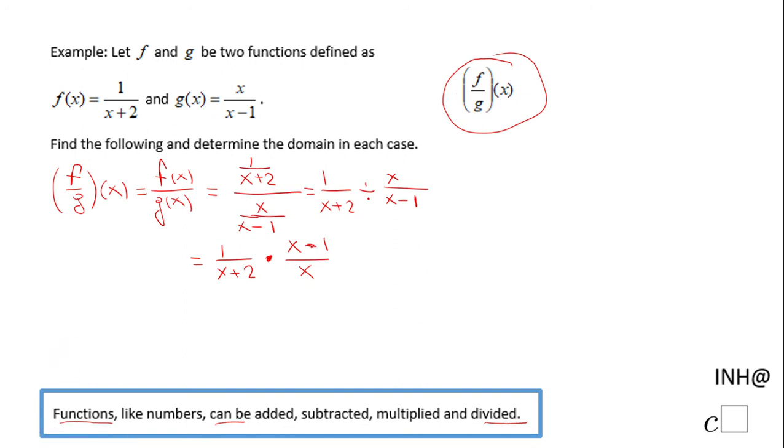We multiply these two fractions and get x minus 1 over x times x plus 2. This is the result for f over g of x.